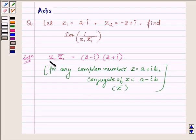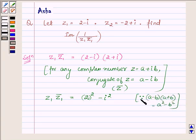So now let us find the value of Z1 into Z1 conjugate, which when applying the formula comes equal to 2² - i². Since (a-i)(a+i) = a² - b², and here in place of a we have 2 and in place of b we have i, so 2² - i² which is 4 - (-1) which is equal to 5.